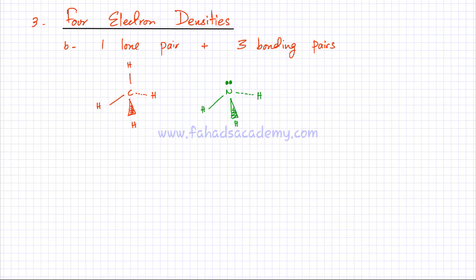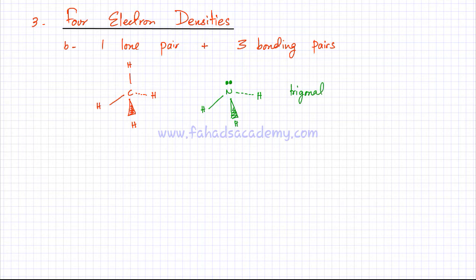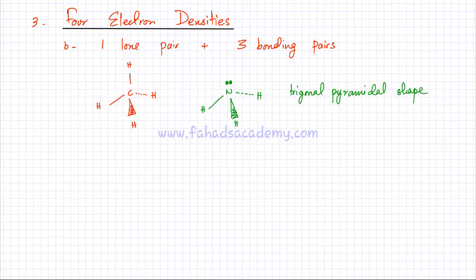The shape is exactly the same as methane except for one thing: instead of carbon having another bond with hydrogen on the fourth side, nitrogen just has a lone pair — nothing is attached on the fourth side. So you can't call this tetrahedral now, because it only looks like a pyramid since there's nothing on the fourth side of nitrogen. This shape is called a trigonal pyramidal shape.